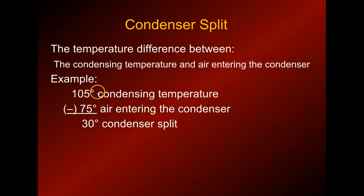For example, if the condensing temperature is 105 degrees — which you read on your gauges — and the ambient is 75 degrees, then the air entering the condenser is 75 degrees and there's a 30 degree condenser split. It's the same concept as the evaporator coil.